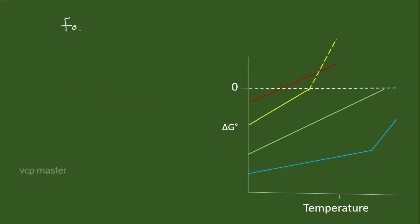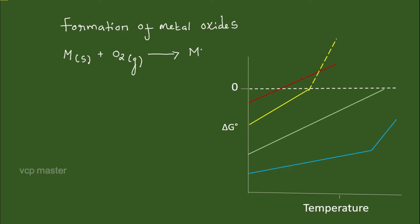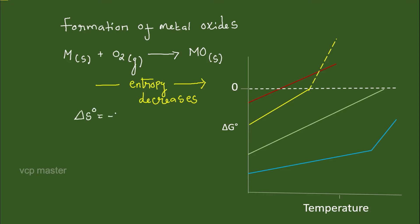In the Ellingham diagram, solid metal combines with gaseous oxygen to form solid metal oxide. Moving from reactant to product side, entropy decreases since gaseous molecules on the reactant side are replaced by only solids on the product side. So the entropy change is negative, making the slope positive — because the slope is given by the negative of ΔS⁰. Note that in the Ellingham diagram, metal oxide formation reactions must be written for one mole of oxygen.